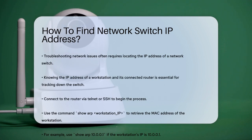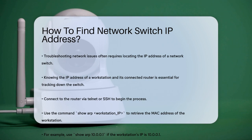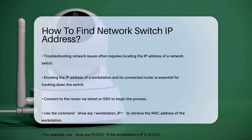First, let's start with the basics. If you know the IP address of a workstation and the router it's connected to, you can use this information to track down the switch. Begin by connecting to the router using Telnet or SSH. Once you're in, use the command 'show arp [workstation IP]' to get the MAC address of the workstation. For example, if the workstation's IP is 10.0.0.1, you'd use 'show arp 10.0.0.1' to get its MAC address.